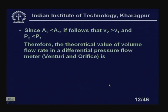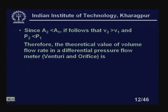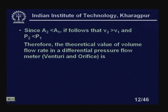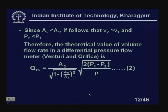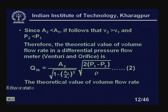Since A2 is less than A1, V2 is greater than V1 — the flow velocity at the restriction is higher than the actual pipe flow velocity. The theoretical value of the volumetric flow rate for both venturi and orifice is: Q_theoretical = A2 / √(1 − (A2/A1)²) × √(2(P1 − P2)/ρ). This is equation number 2.